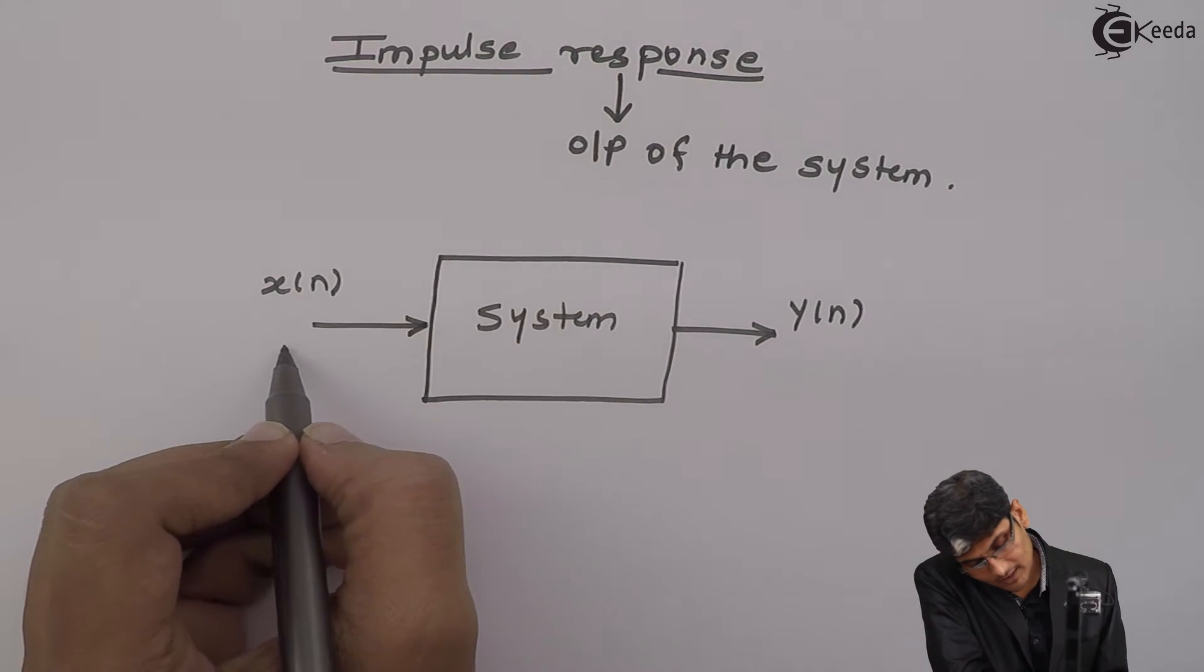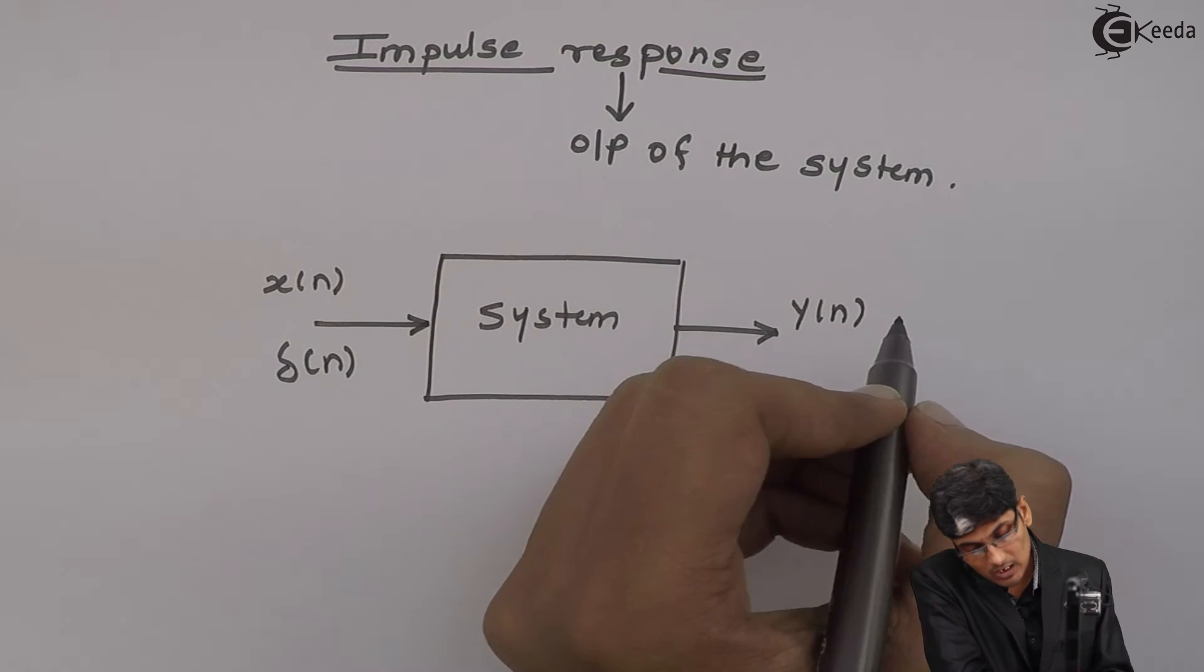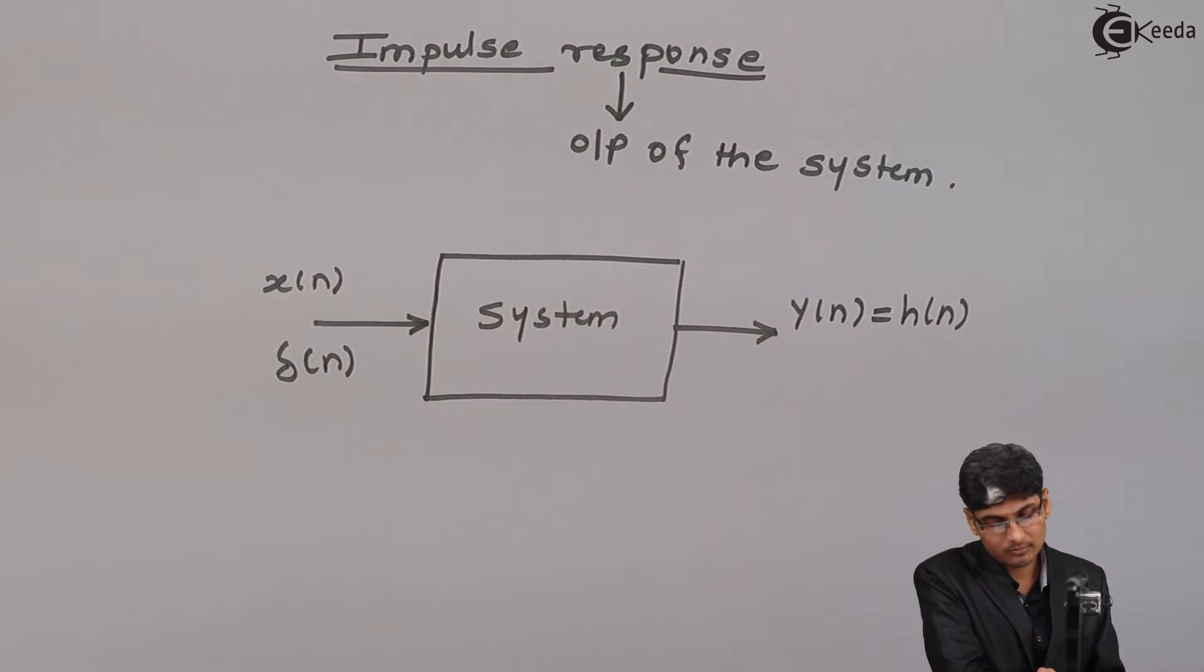If the input of the system is an impulse that is delta n, then the output of the system is called as impulse response.